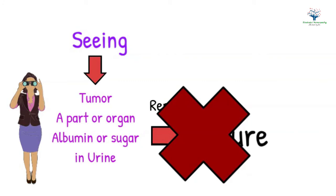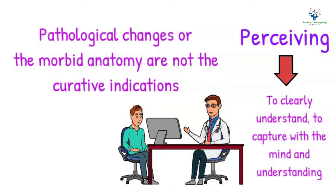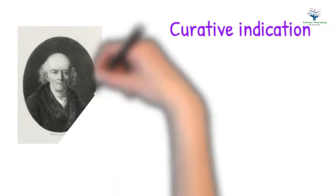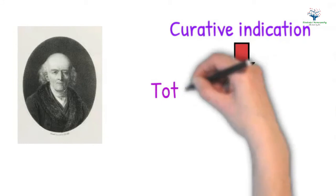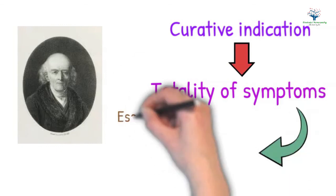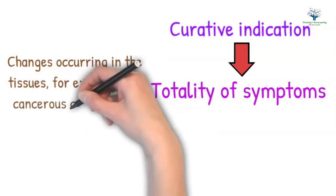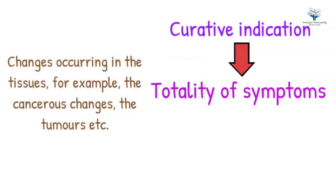By using the word 'perceive,' it is indicated that Hahnemann did not regard pathological change or morbid anatomy as the curative indication. According to Hahnemann, the totality of symptoms is the curative indication in each case of disease. The disease is only represented or expressed by the totality of symptoms. The totality is external but represents the internal disorder. Pathological changes such as cancerous changes and tumors do not form the curative indication and should be excluded.